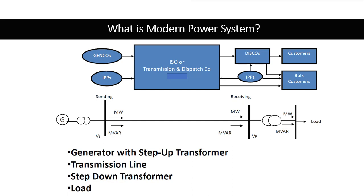So what is a modern power system? Modern power system is a combination of generation, transmission, and distribution. On the generation side, we have different kinds of generators. The generator or the power plant can be from an independent power producer or it can be a government-owned power plant. Similarly, there is a transmission operator whose job is to transmit the power generated by the power plant and send it to the customer.